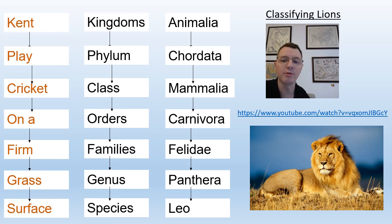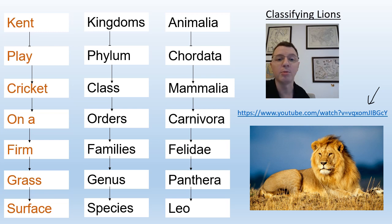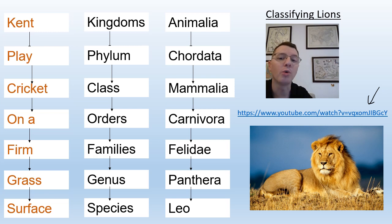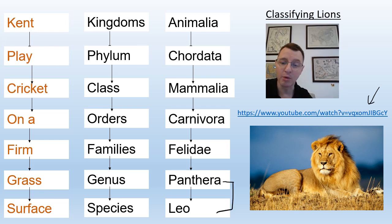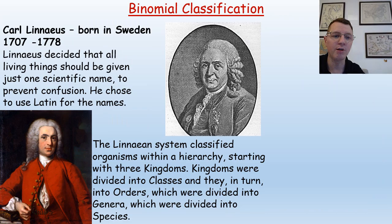Let's look at classifying lions as an example. Lions are in the kingdom Animalia, the phylum Chordata, the class Mammalia (meaning they are mammals), the order Carnivora, the family Felidae, the genus Panthera, and the species leo. So the binomial Latin name of a lion is Panthera leo. This entire classification system was devised by Carl Linnaeus, a Swede born in 1707, who recognized a major problem with naming organisms.